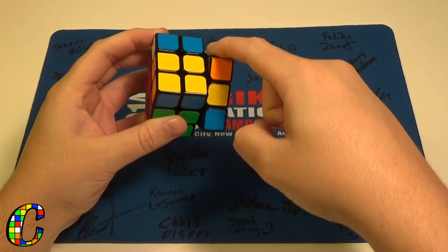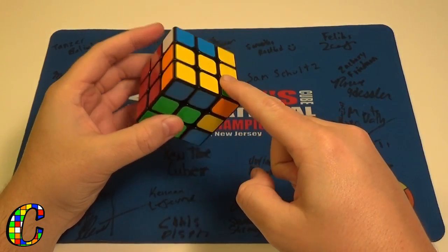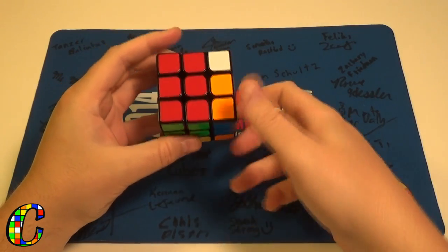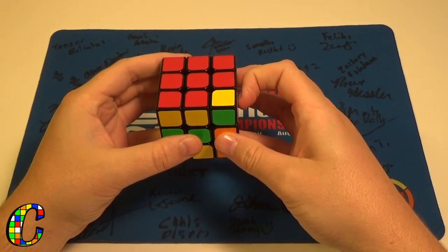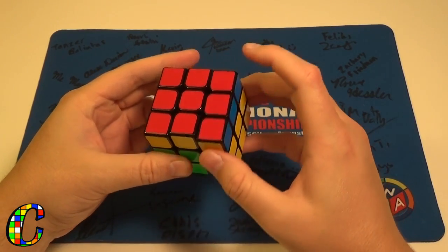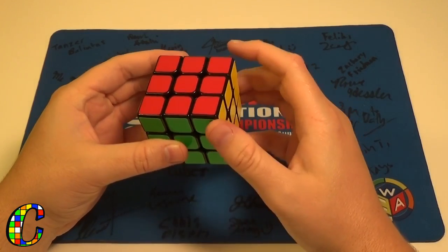R', then you do a Z rotation, grab with your thumb, R2 U, R' D, R, then push with your thumb, U'.